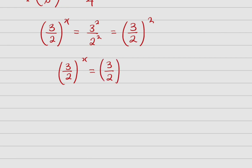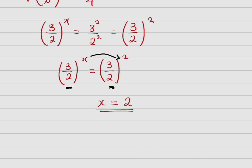So we have (3 over 2) raised to power x equals (3 over 2) raised to power 2. Since the bases are the same on both sides, the powers must be equal. Therefore we conclude that x equals 2.